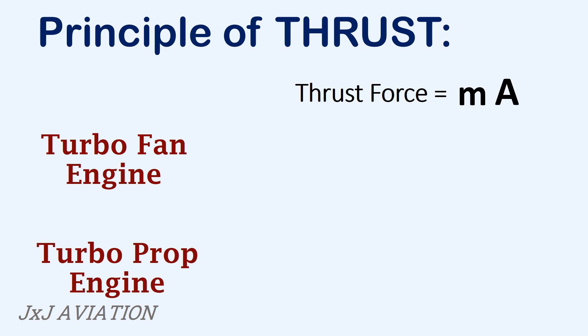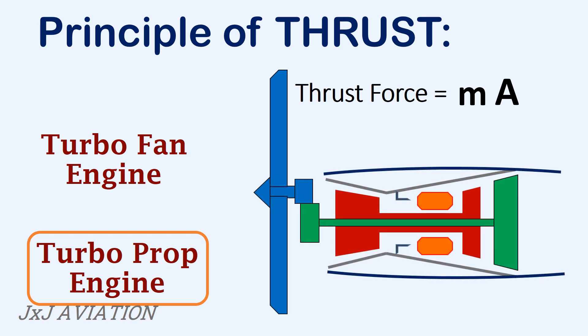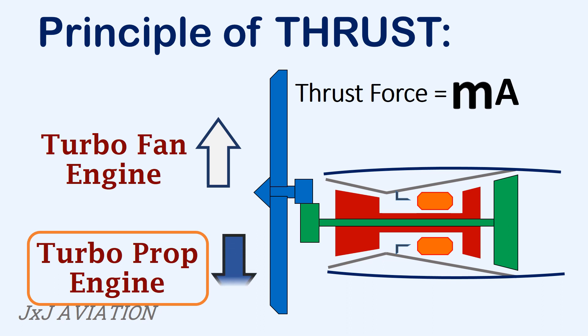If we consider a turboprop aircraft, we have a propeller which creates the thrust. Here a large quantity of air is accelerated by a small value, which causes an increase in the thrust force. So in a turbofan, the thrust can be increased by increasing the acceleration of air. But in a turboprop, there is a limitation on the mass of air being accelerated, so it produces lesser thrust.